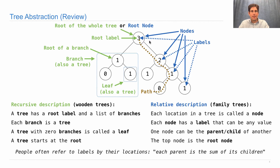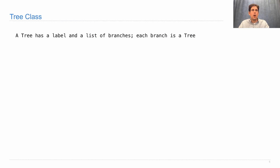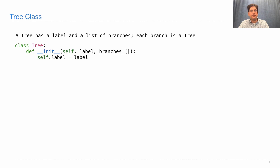One more piece of terminology: a sequence of nodes from the root to a leaf is called a path. Here's a path: 3, 2, 1, 0. Now, time for the tree class implementation. A tree takes a label and a list of branches, which by default is empty.